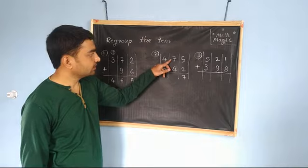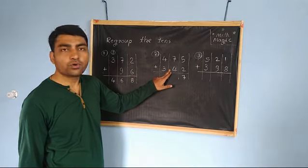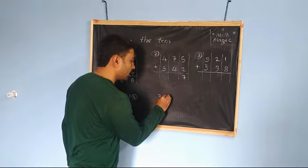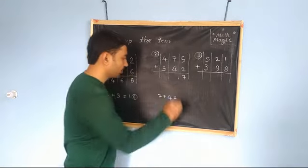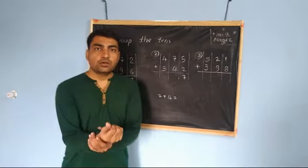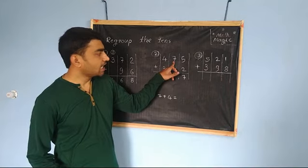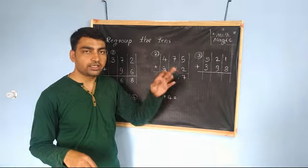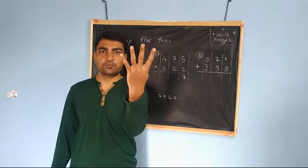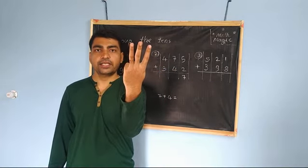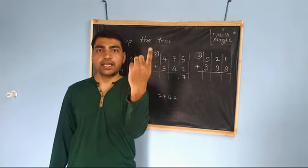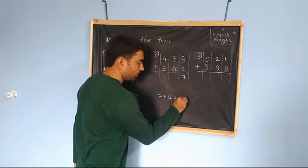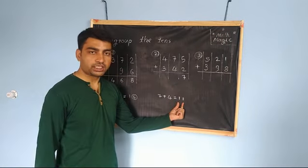Let's go to the next place. That is 7 and 4. So let's add 7 and 4. The biggest digit is 7, so let's keep it in mind. And let's take 4 fingers. After 7, count these 4 fingers: 8, 9, 10, 11. So 7 plus 4 is 11. Here we got a 2-digit number.